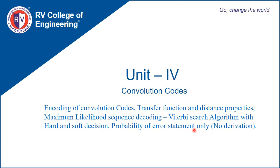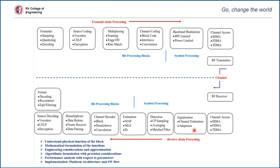Let us try to understand where we are sitting in a digital communication system as a whole. We are going to focus more on the channel coding and channel decoding part in this unit. The channel encoder transforms the information sequence into a discrete encoded sequence called a codeword. In most cases, the codeword is a binary sequence, although in some applications non-binary codes are used. The design and implementation of channel encoders is to combat the noisy environment in which codewords must be transmitted or stored.